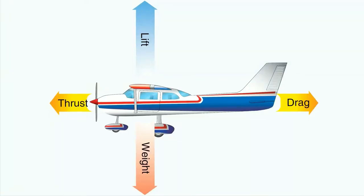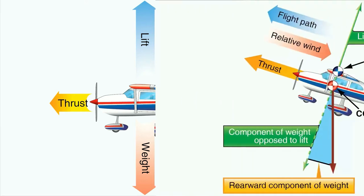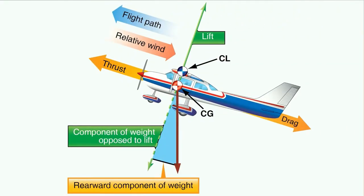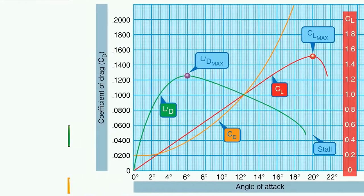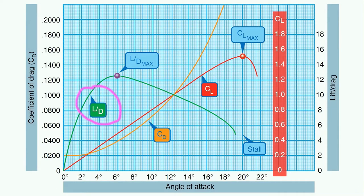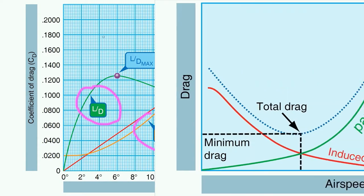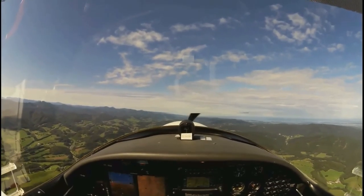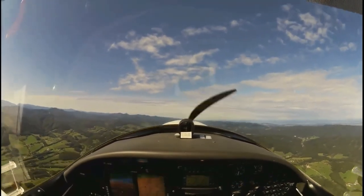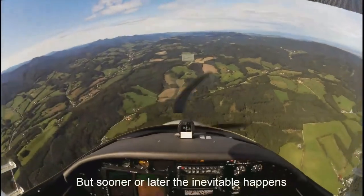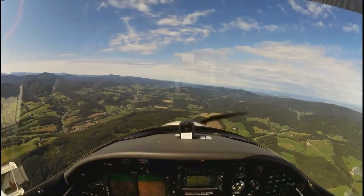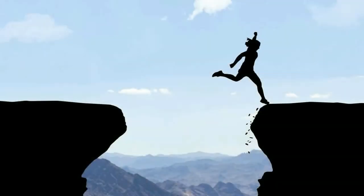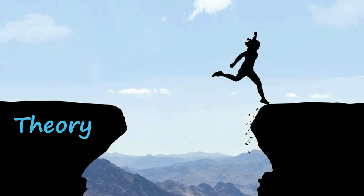In flight school we learn about the four forces of flight and that these forces need to be balanced for steady straight flight. We learn that lift and drag depend on angle of attack and on airspeed. We learn a good dose of aerodynamic theory but it all remains pretty static, whereas practical flight training can be pretty dynamic. So I wondered if a real-time visualization of the forces at play might narrow the gap between theory and practice.